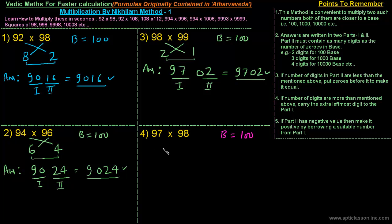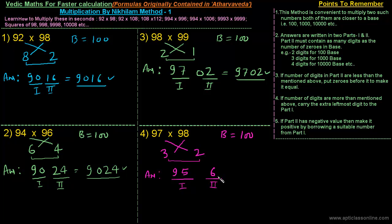Last example: 97×98. The base is 100. 97 is 3 less than 100 and 98 is 2 less than 100. The first part is 97−2 = 95. The second part is 3×2 = 6. Since the second part has only one digit but must have two, we put a zero before it, giving 06. The final answer is 9506. As we can see, this is a very simple method, and with practice you can write the answer directly. We'll see other types of examples in the next class.